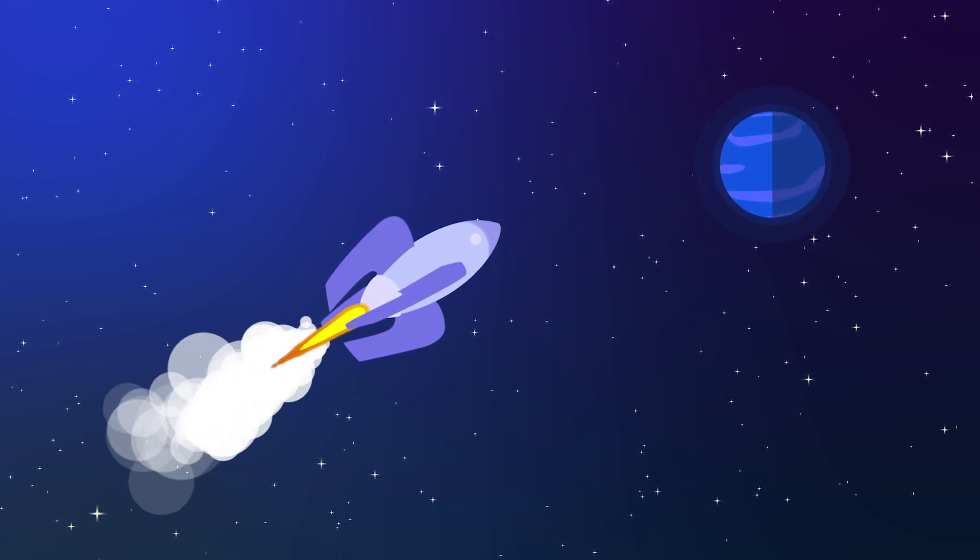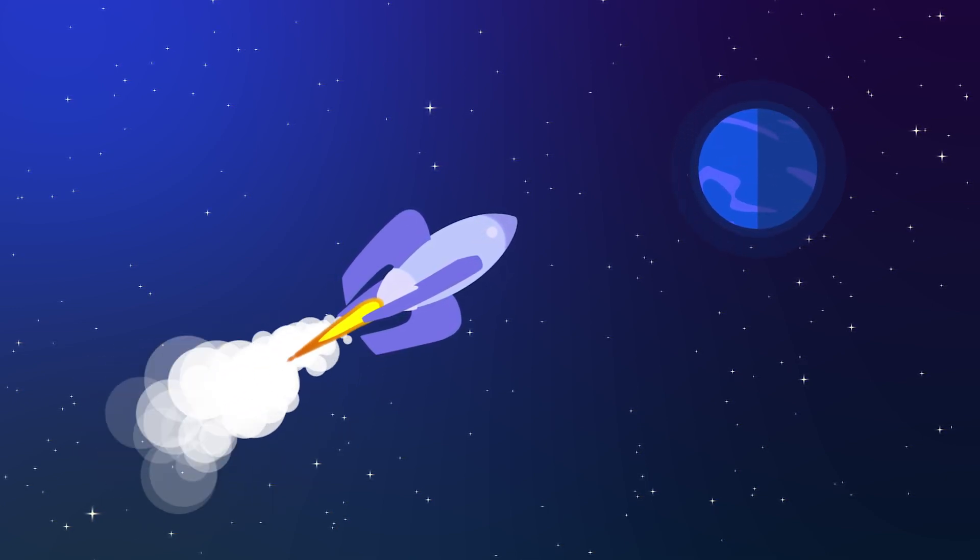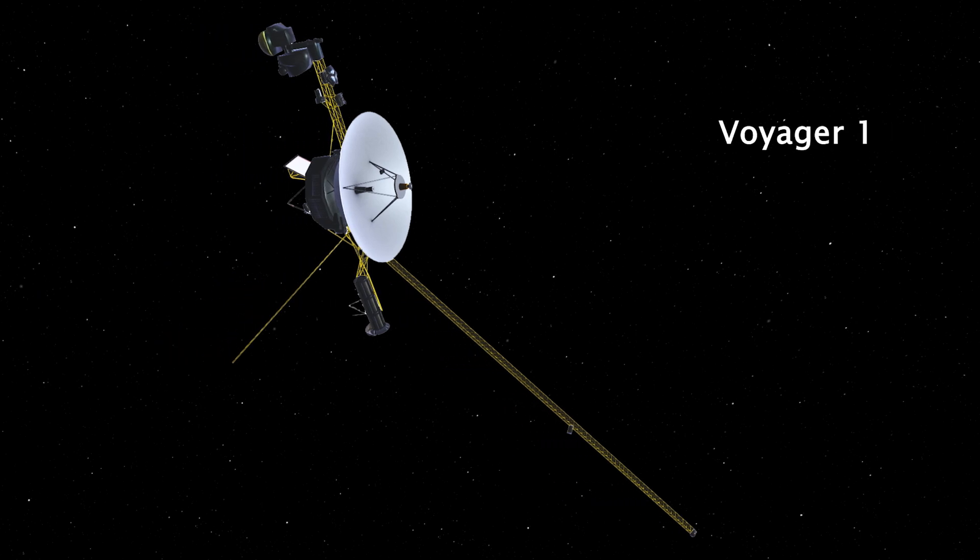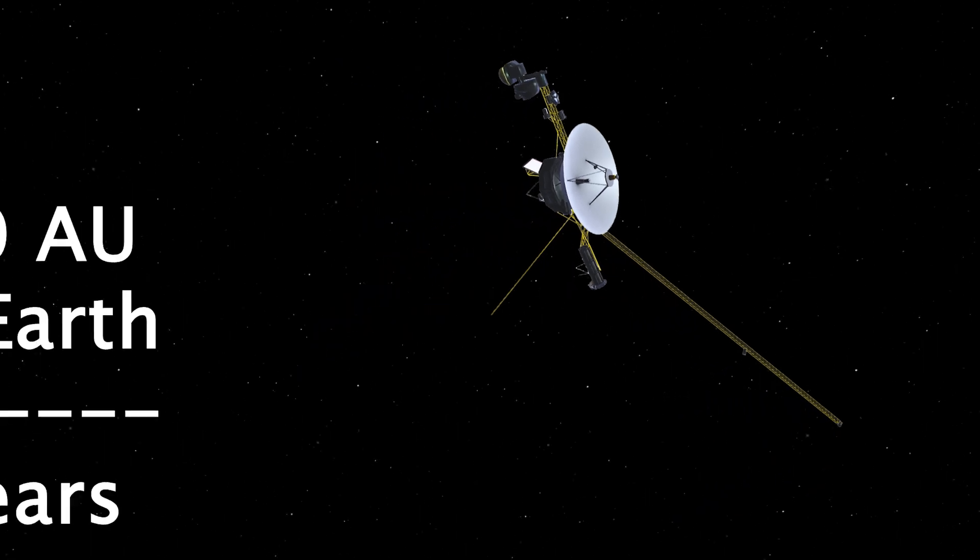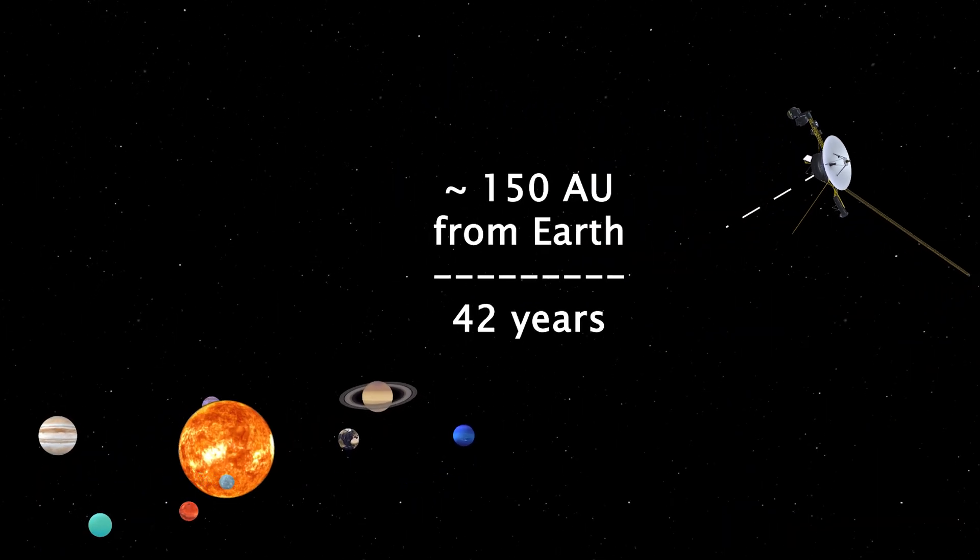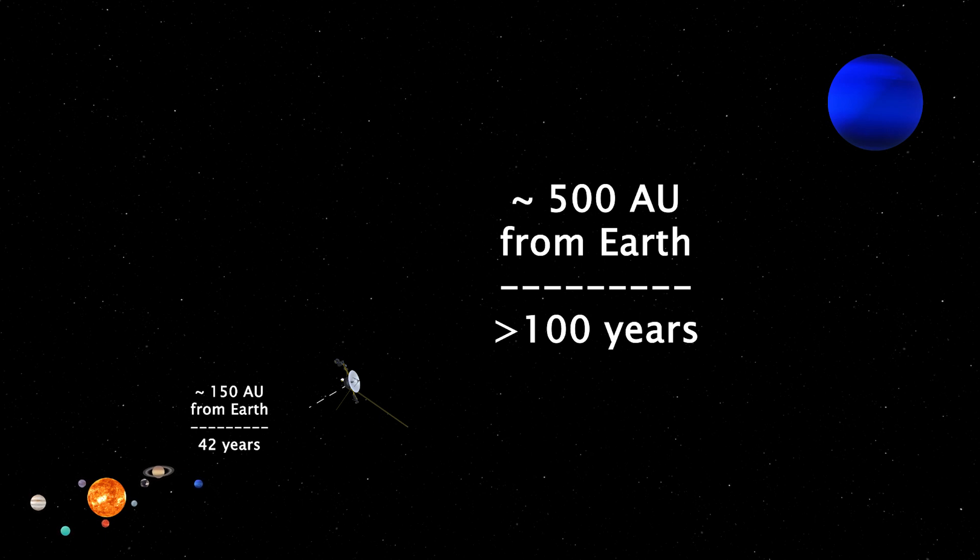You might wonder if this could even be feasible in the foreseeable future. After all, the farthest traveled human-made object is the Voyager 1 spacecraft. In its 42 years of operation, it has managed to reach somewhere here, while Planet Nine is expected to be somewhere here. It would take more than a human lifespan, and only slightly less than it took us to complete this first episode, for Voyager 1 to reach the hypothetical location of Planet Nine.